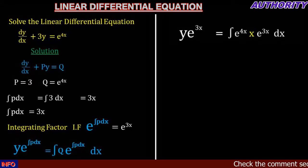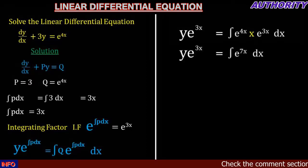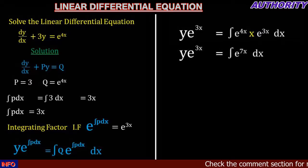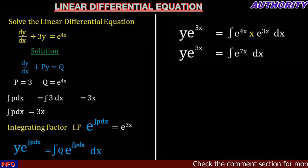When we multiply e raised to power 4x by e raised to power 3x, that gives us e raised to power 7x. So we have the integral of e raised to power 7x dx.